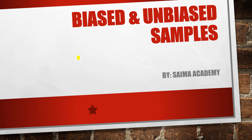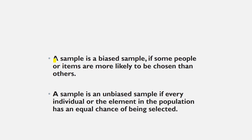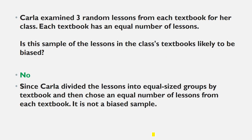In this lesson I will explain the concept of biased and unbiased samples. A sample is a biased sample if some people or items are more likely to be chosen than others. On the other hand, a sample is an unbiased sample if every individual or element in the population has an equal chance of being selected.